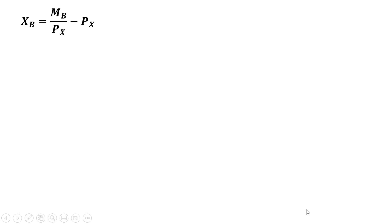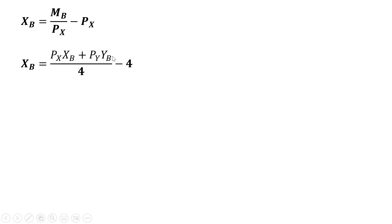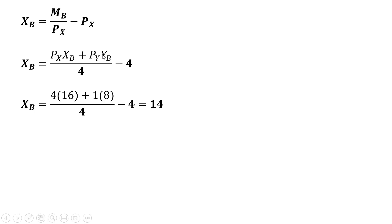Another way of looking at this is to take consumer B's demand for good X directly. Consumer B's income is the price of good X times the initial endowment of good X plus the price of good Y times the initial endowment of good Y. Making our substitutions — initial endowment of good X is 16, initial endowment of good Y is 8 — we once again get an answer of 14.